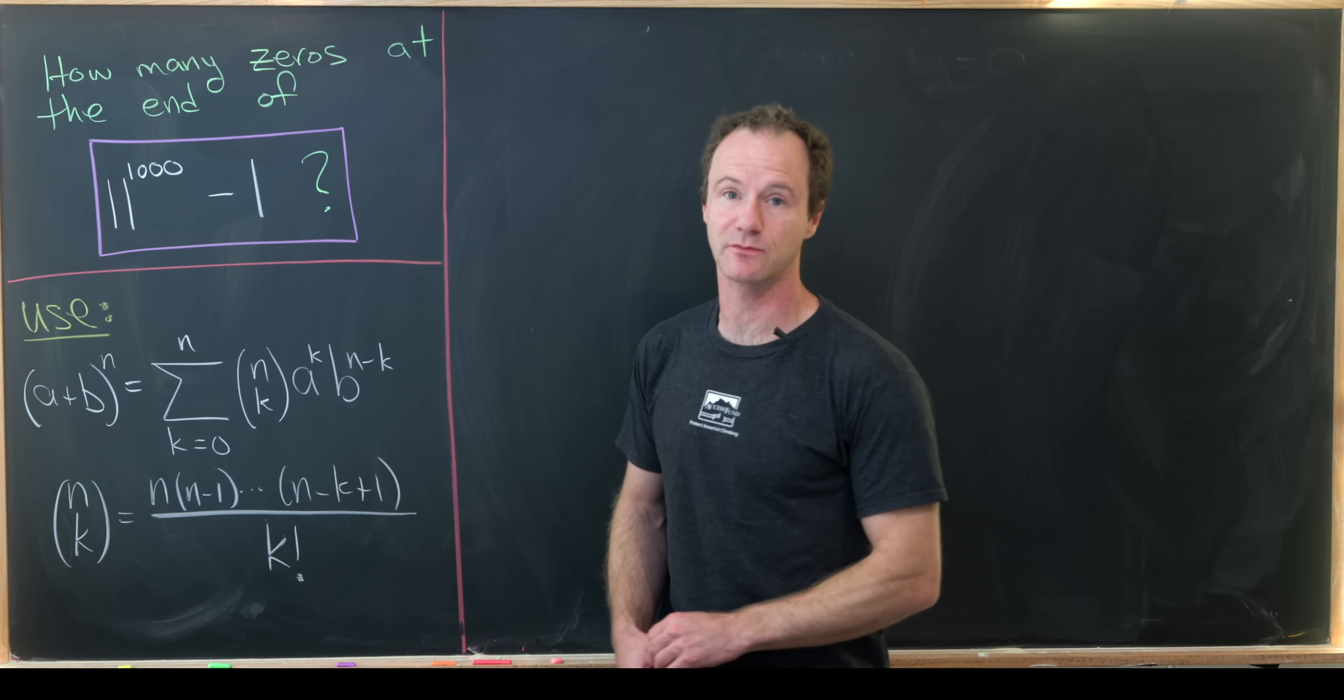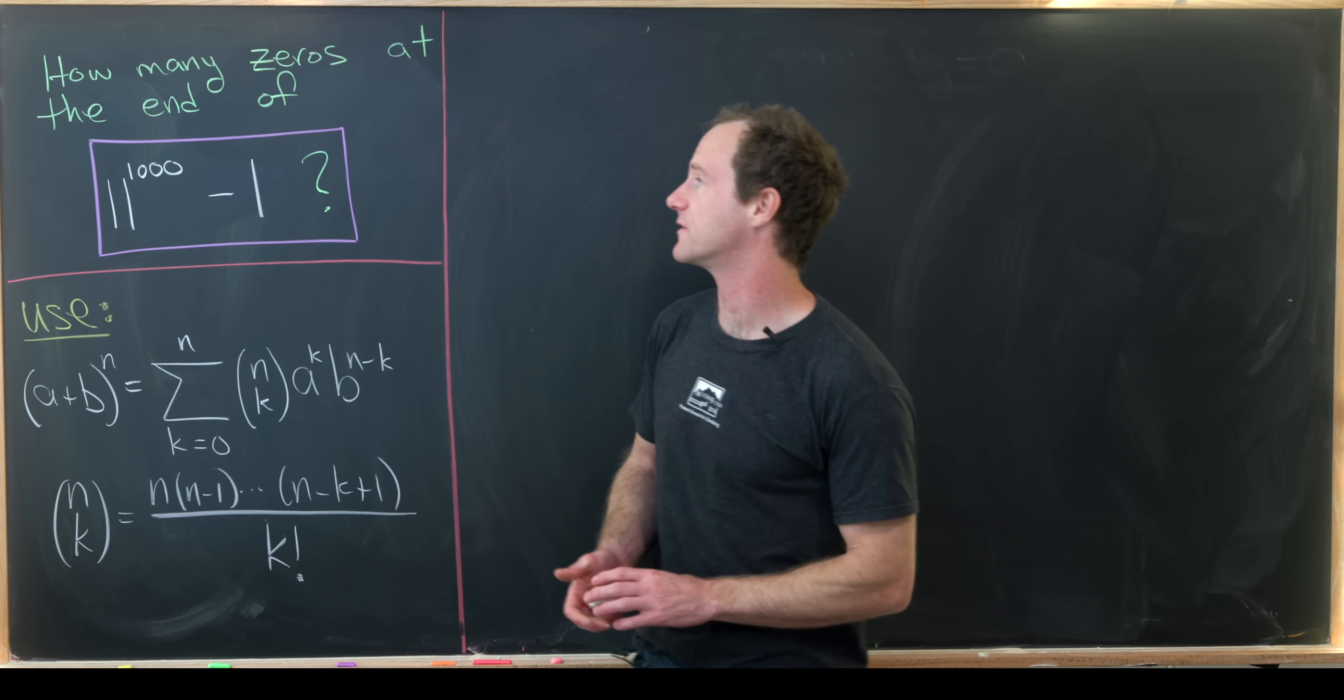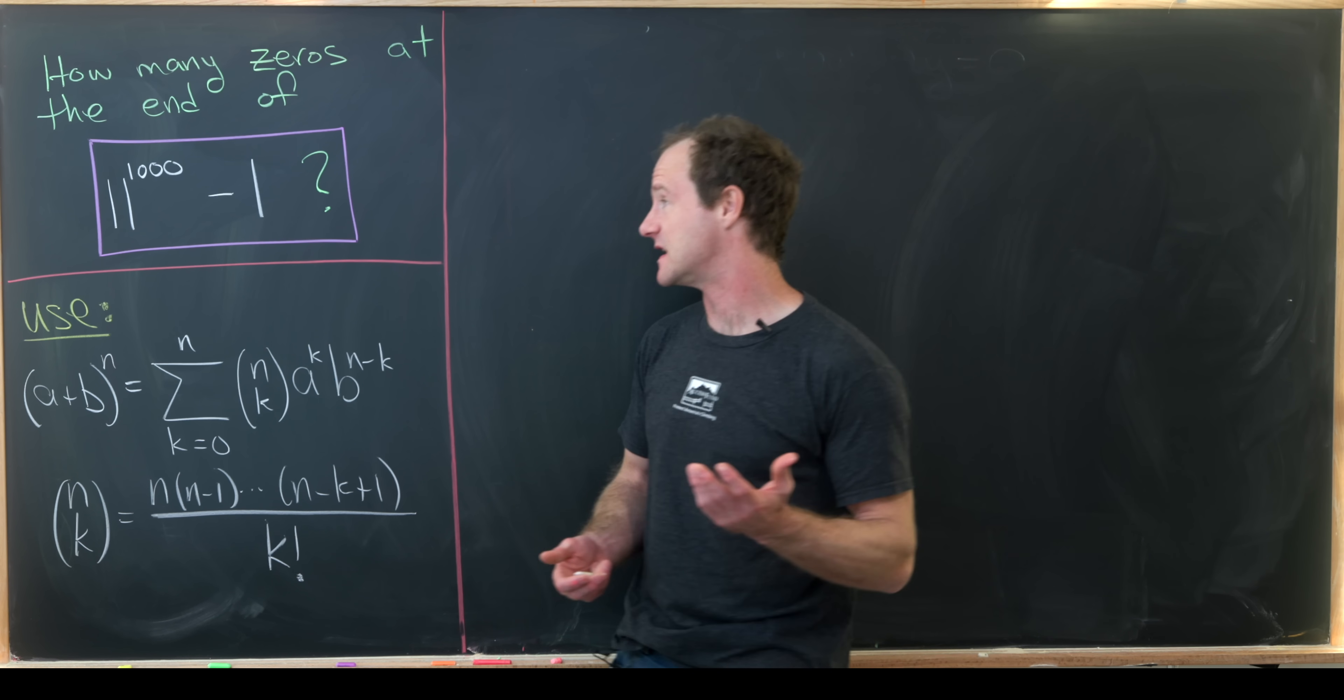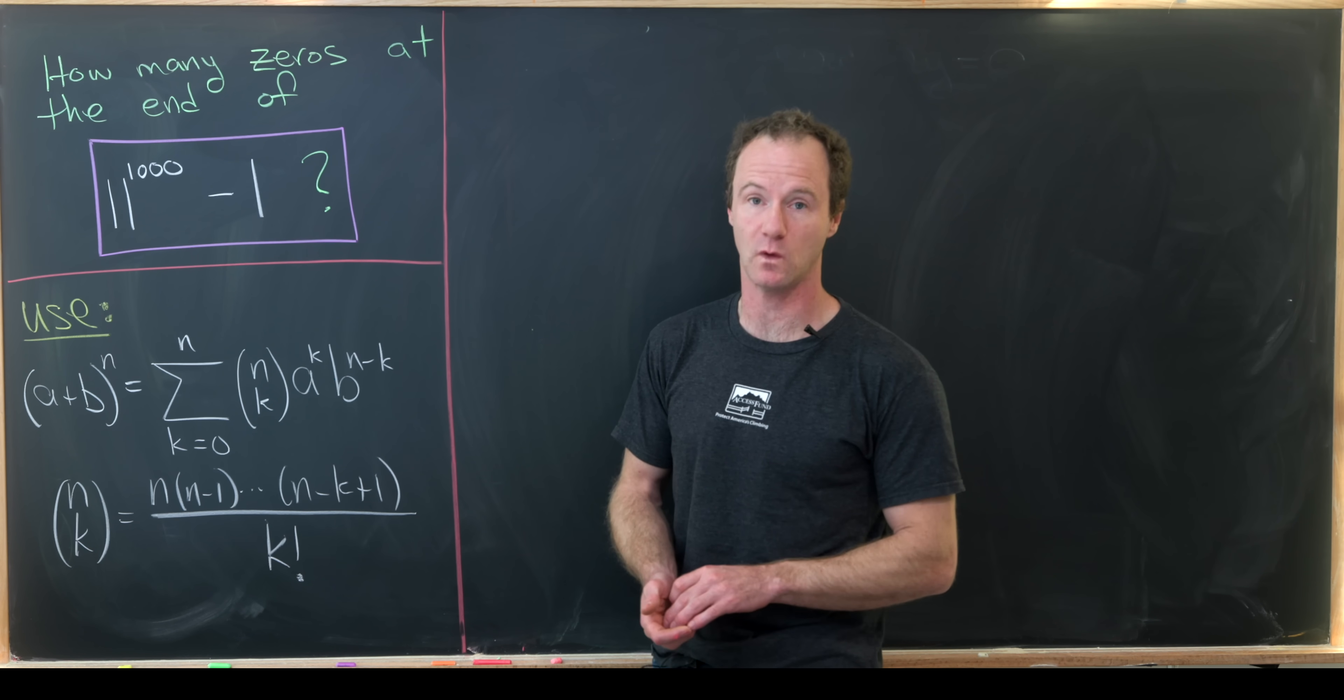Today I've got a nice number puzzle type problem to show you. So what we'll do is determine the number of zeros at the end of 11 to the thousand minus 1.